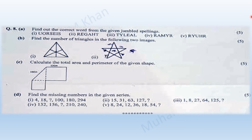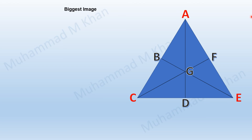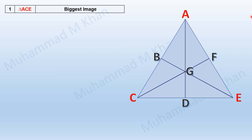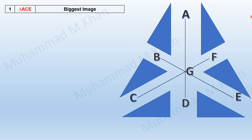Part B required us to calculate the number of triangles in given shapes. The first shape was a triangle with line segments inside it. The first thing we need to do is assign labels to every point of intersection. The shape itself is a triangle, so the first triangle is the biggest one, denoted as triangle ACE.